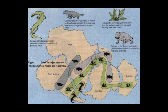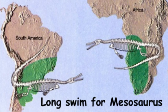Wegener also used similar fossil locations to support his hypothesis, as fossils of the same animals and plants are found in various parts of the world. For example, scientists have found parts of a small crocodile freshwater fish known as a Miosaurus in both Brazil and South Africa.